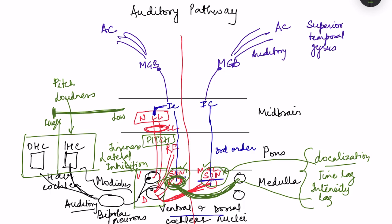Information also goes to the reticular formation, which is important for activation of the nervous system — sending information upward to activate the cortex and downward into the spinal cord. Your awake and alert state is caused by activation of the reticular formation. So our response to a loud sound that makes us alert, such as waking from sleep upon a sudden loud noise, is caused by information going to the reticular formation.